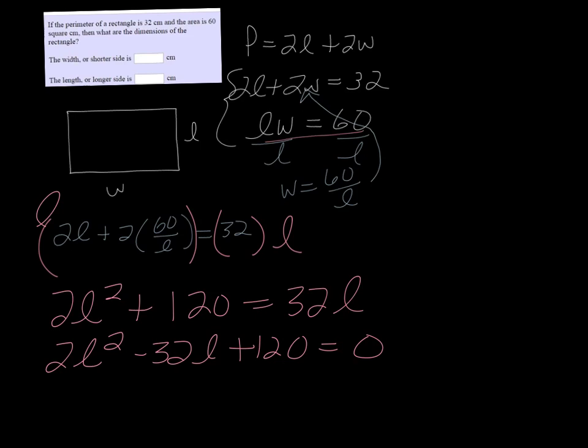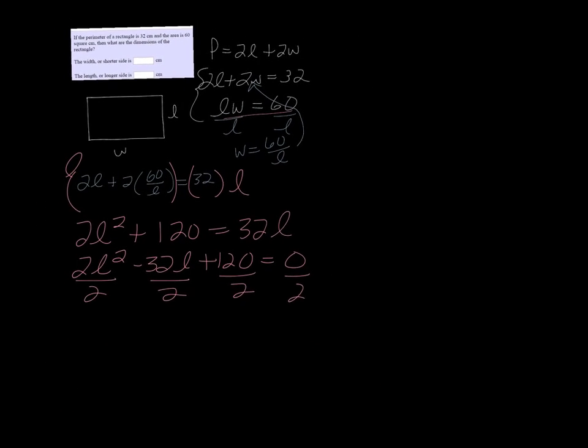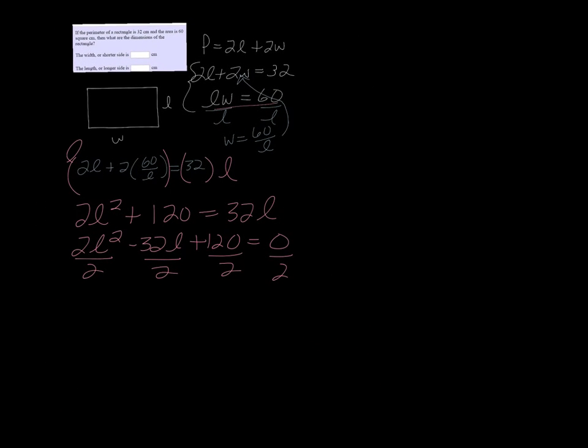And divide everybody by 2, because we can, and it'll just make things easier. And that gives us l squared minus 16l plus 60 equals 0.